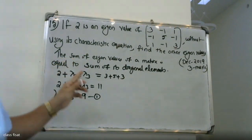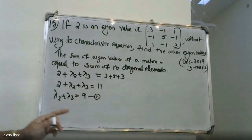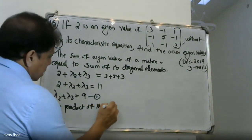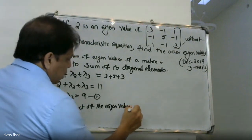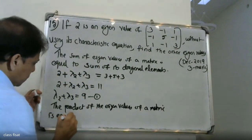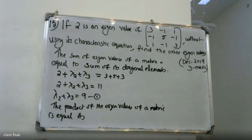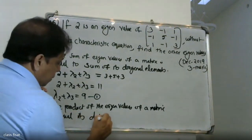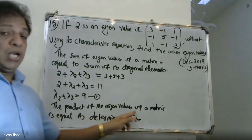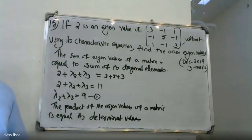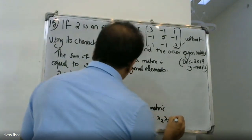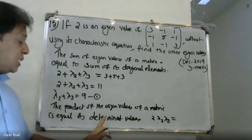The additional property is that the product of the eigenvalues of a matrix is equal to its determinant value. So the product of the eigenvalues — 2 times λ2 times λ3 — is equal to the determinant of the matrix.